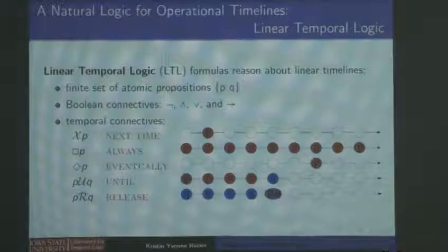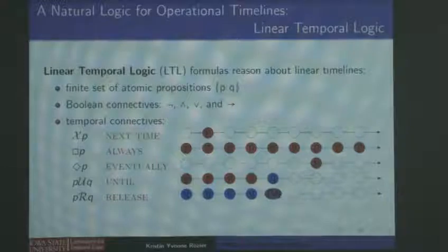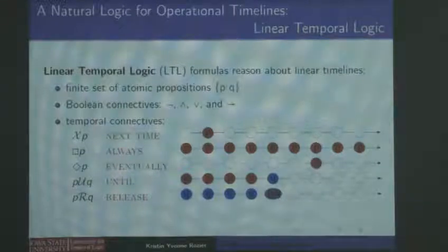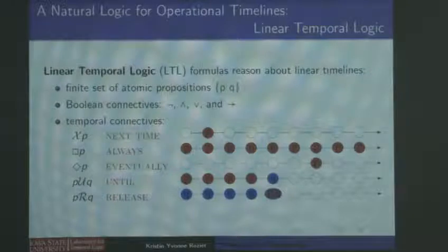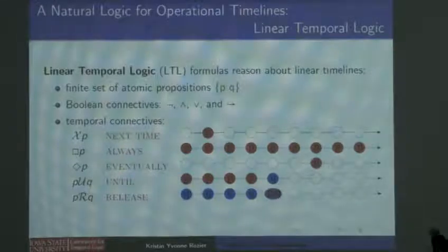We can also say P will eventually be true, which means one of these formulas has to have P. We can say more complicated things, such as P must be true until some time when Q is true, and Q must be true in our set of time steps — the 'until' operator. There's also a release operator: pushing button P will release thing Q from having to be true. If I push P, then P and Q are true at the same time, Q needed to hold until then, and after that we don't care.